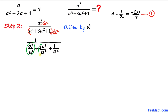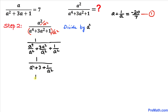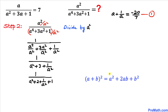Simplifying those denominator fractions gives us 1 divided by a squared plus 3 plus 1 over a squared. Now let's rewrite 3 as 2 plus 1, so this becomes 1 divided by a squared plus 2 plus 1 over a squared plus 1. Recognizing the perfect square pattern, this can be written as 1 divided by the quantity (a plus 1 over a) squared plus 1.